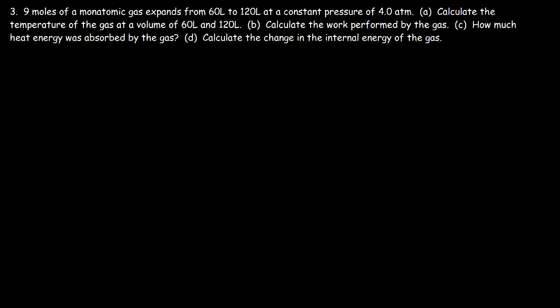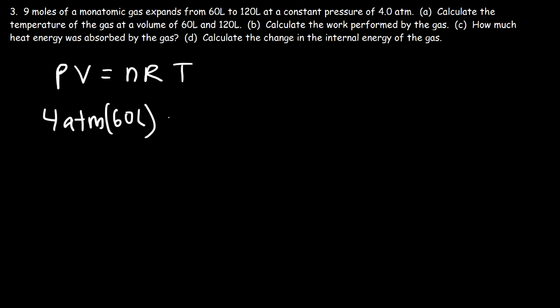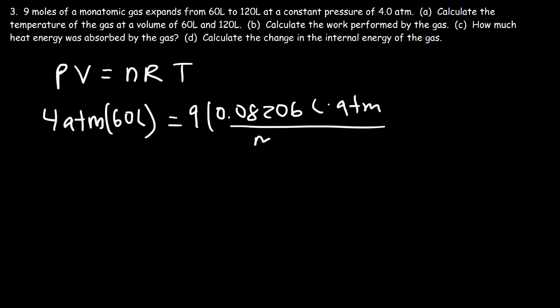Number 3: 9 moles of a monatomic gas expands from 60 liters to 120 liters at a constant pressure of 4 atm. Calculate the temperature of the gas at volumes of 60 and 120 liters. To calculate the temperature we use the ideal gas law PV = nRT. The pressure is 4 atm, initial volume is 60 liters, n is 9, and R is 0.08206 liters·atm per mole per Kelvin.